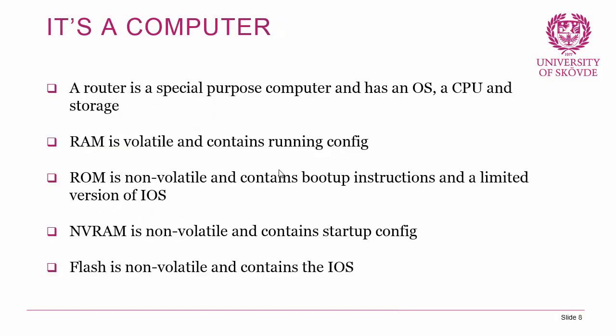What is a router? In essence, it's a computer — a special-purpose computer with an operating system, a CPU, and storage. There are different types of storage within a router. First, RAM — random access memory — which is volatile, meaning it only maintains data while powered on. When the device loses power, whatever is in RAM is lost. The RAM contains the running configuration — the configuration as it currently looks.